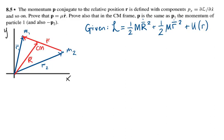The momentum P conjugate to the relative position R is defined with components Px equals the partial derivative of the Lagrangian with respect to x dot, and so on. Prove that P equals μ, the reduced mass, times Ṙ, the change in the relative position of the two masses. Prove also that in the center of mass frame, P is the same as P₁, the momentum of particle 1, and also negative P₂, the momentum of particle 2.